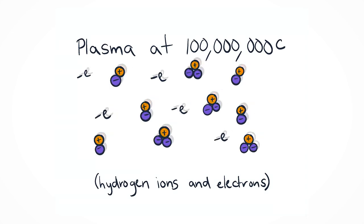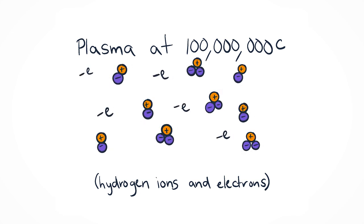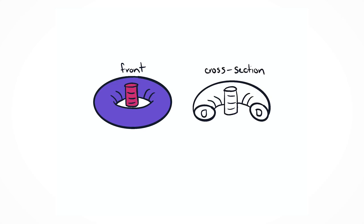The plasma must be confined so that it remains dense enough for the ions to fuse. The most promising confinement strategy is to use magnets to confine plasma in the shape of a torus called a tokamak.